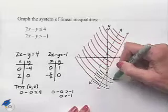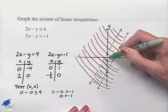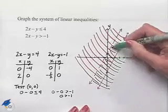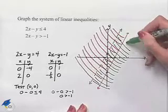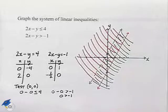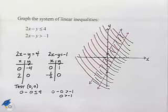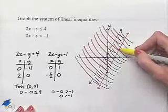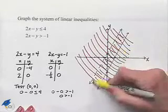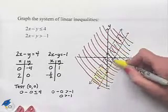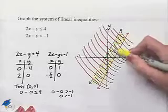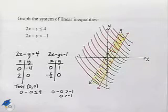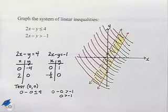Since that's true, we want to include the origin in the half plane shaded for the second inequality, which we'll shade in green. The solution to the system is the region where both the orange and green shading overlap — that is, the region between the two parallel lines, which is our system's solution set.